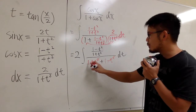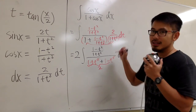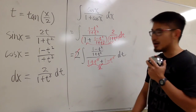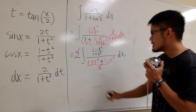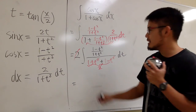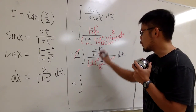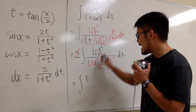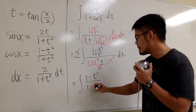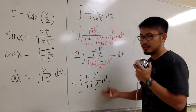Even better: the +t² and -t² cancel each other out. We have 1 + 1, which equals 2 in the denominator. That 2 cancels with the 2 out front. So all together, what we're integrating is just the integral of (1 - t²)/(1 + t²) dt.